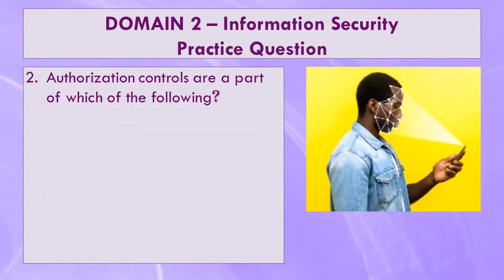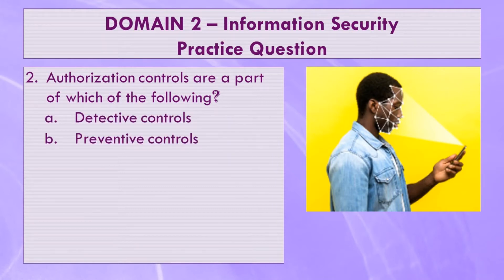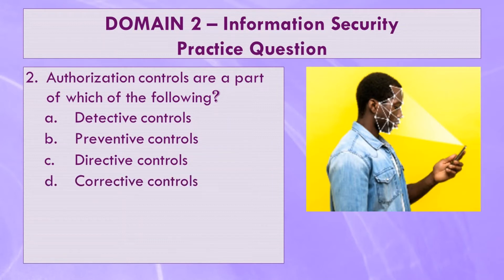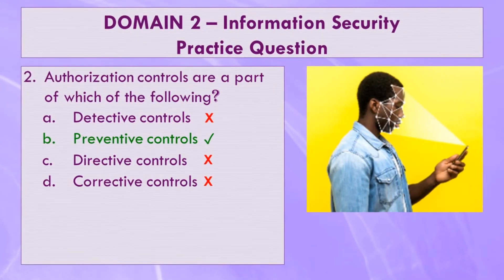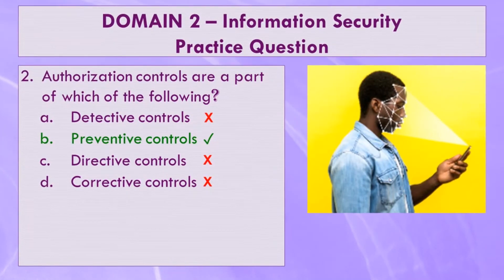Number two: authorization controls are a part of which of the following? A — detective controls; B — preventive controls; C — directive controls; or D — corrective controls. The correct answer is B, preventive controls. Authorization controls block or prevent unauthorized access, and preventive controls deter security events and incidents from occurring. Detective controls detect or identify security incidents and monitor the effectiveness of preventive controls. Directive controls are general controls to handle security incidents and include policies, procedures, and directives from management. Corrective controls are procedures to react to security incidents and remediate issues in a timely manner, requiring advanced preparation since they rely more on human judgment.